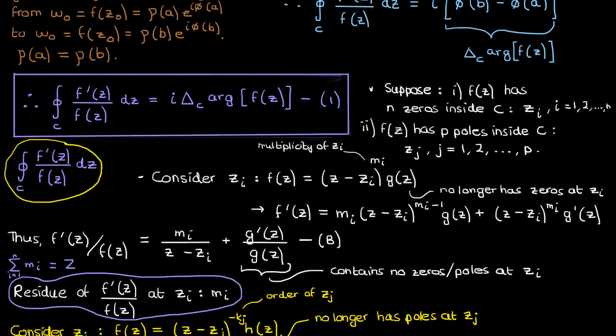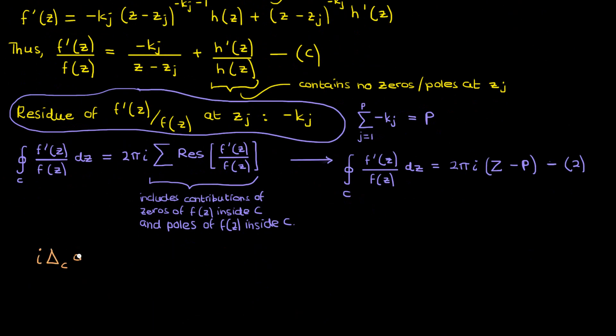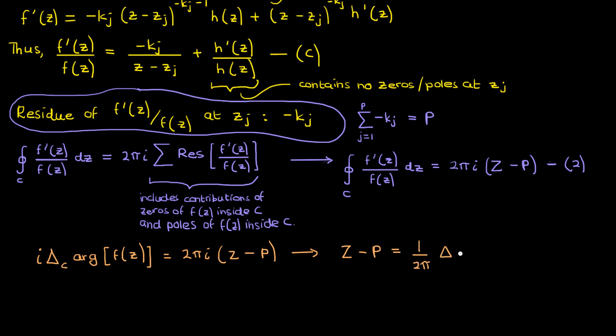Since the left-hand sides of equations 1 and 2 are equal, the right-hand sides must be equal by the transitive property, giving us i times the change in the argument of f of z over the traversal of curve C equals 2 pi i times capital Z minus P. Simplifying, we finally get capital Z minus P equal to the winding number of f of z as we traverse the curve C, where capital Z and P are the zeros and poles of f of z inside the curve C counting multiplicities and orders. And this is what we needed to prove the argument principle.